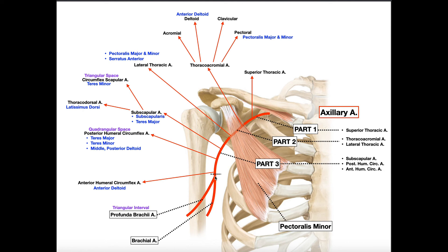The brachial artery continues down the arm, and after it passes the cubital fossa it branches into the radial and ulnar arteries, which will be covered in a separate video. What is important here is that very quickly after the axillary artery becomes the brachial artery, the brachial artery gives off a large branch called the profunda brachii artery, also known as the deep artery of the arm — analogous to the profunda femoris, the deep artery of the thigh.